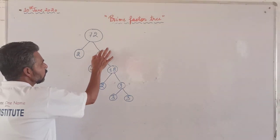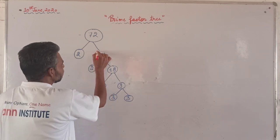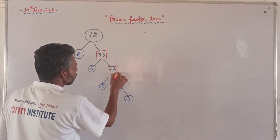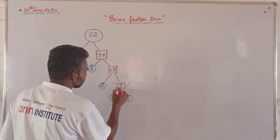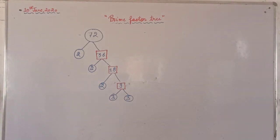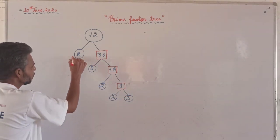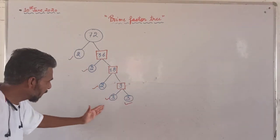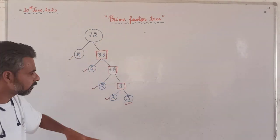In some of the books, you will find that the number which can be further divided is written in the square. This can also be there. The number which we can divide is written in the square box. We can prepare the factor tree like this.